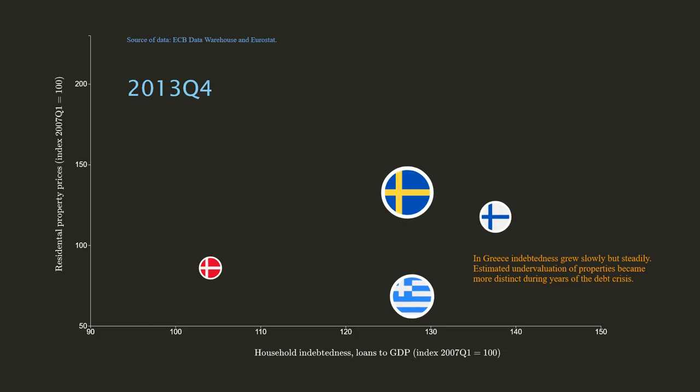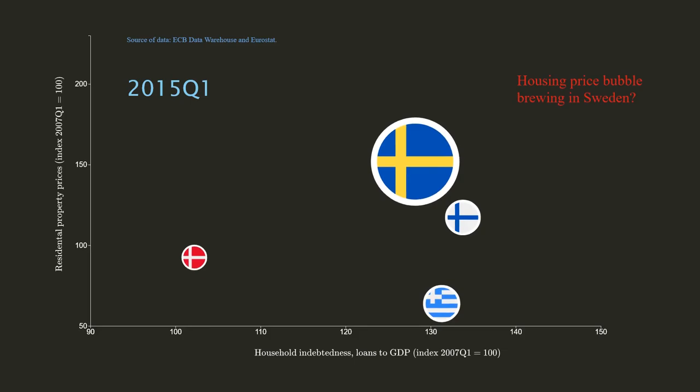In Greece, indebtedness grew slowly but steadily. Estimated undervaluation of properties became more distinct during the years of the Greek debt crisis.